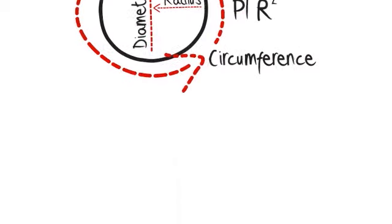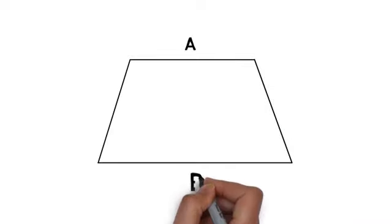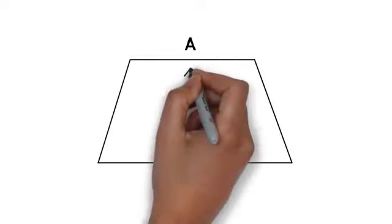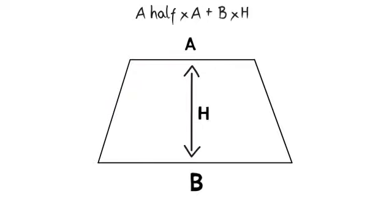So let's move on to the area of a trapezium. A denotes the top, B denotes the bottom, and H is the height of the trapezium. The formula to work out the area of the trapezium is a half times A plus B multiplied by H.